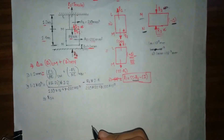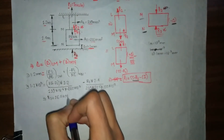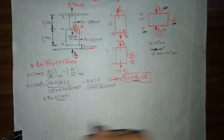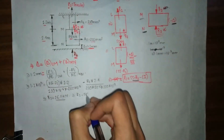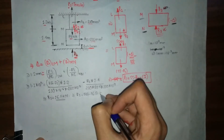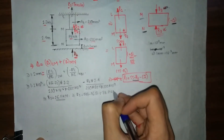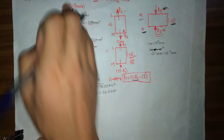On solving, we get R2 equals 16.5 kN. Using equation 1, R1 equals 55 minus R2, which is 55 minus 16.5, giving R1 equals 38.5 kN. So we have calculated the values of both R1 and R2.